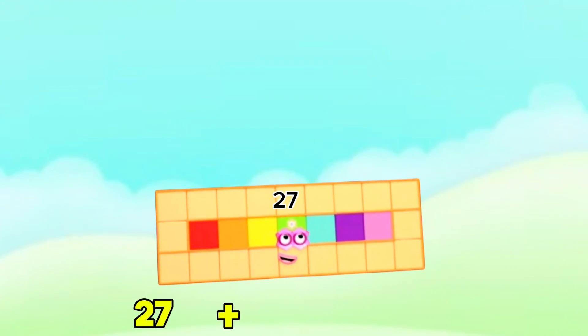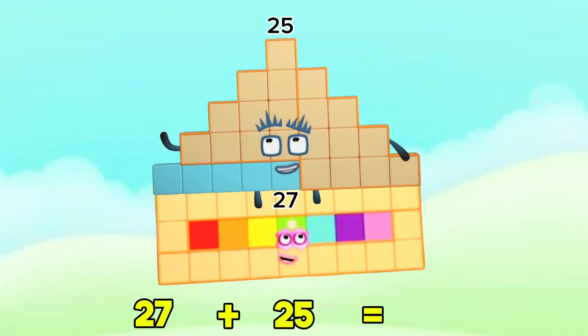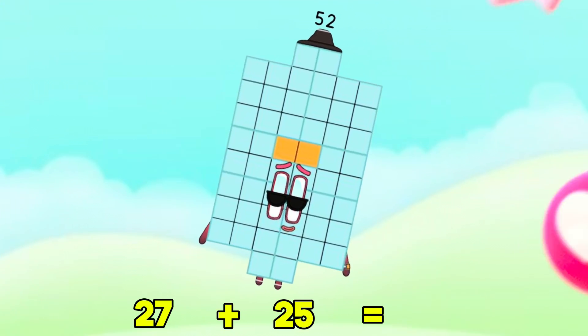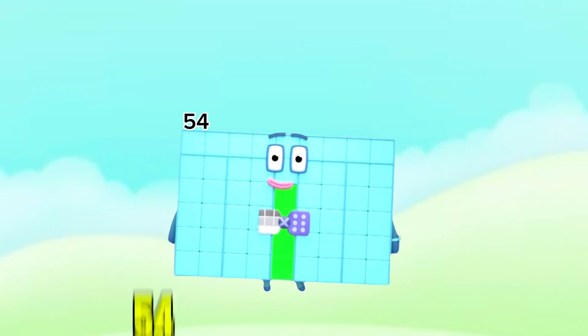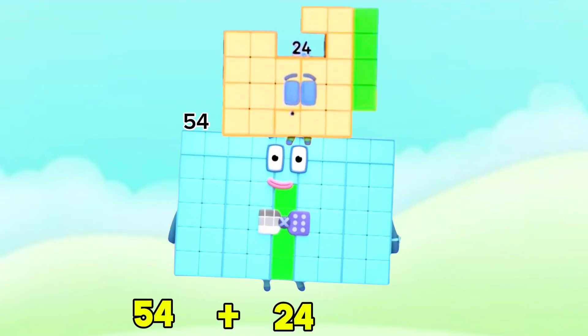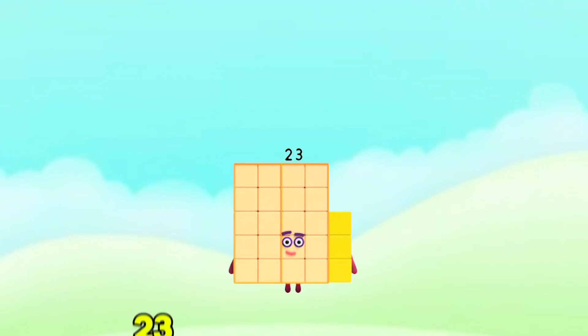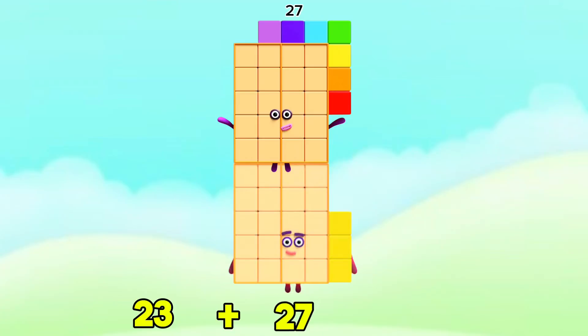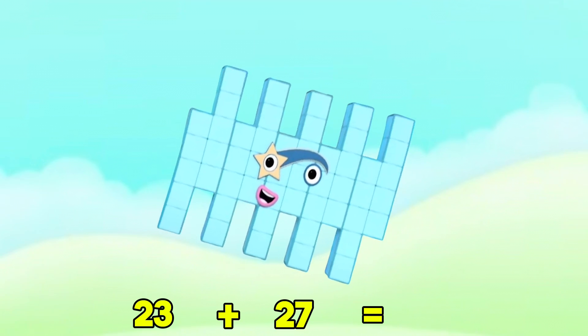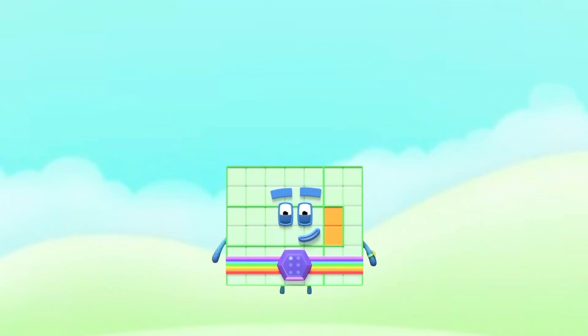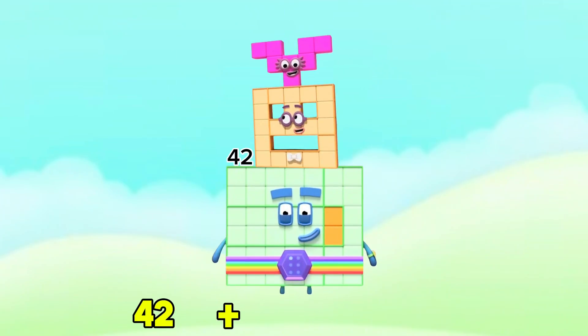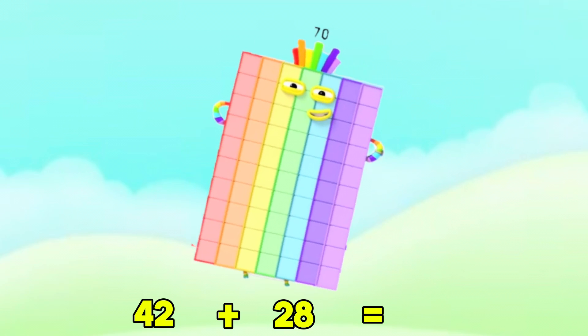27 plus 25 equals 52. 54 plus 24 equals 78. 42 plus 28 equals 70.